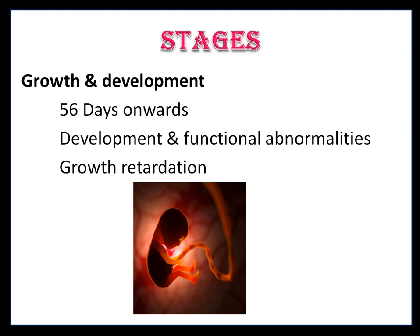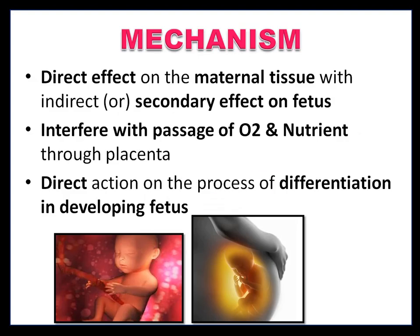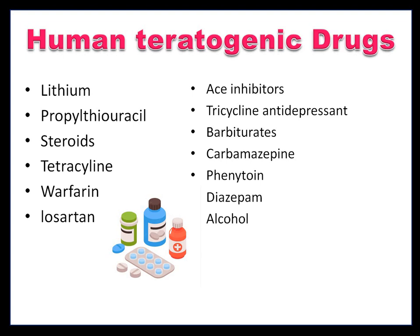From 56 days onwards, development and functional abnormality is present, resulting in growth retardation. The mechanisms include: direct effect on maternal tissue with indirect secondary effect on the fetus, interference with passage of oxygen and nutrition through the placenta, and direct action on the process of differentiation in the developing fetus. Human teratogenic drugs include lithium, propylthiouracil, steroids, tetracycline, warfarin, amiodarone, ACE inhibitors, tricyclic antidepressants, barbiturates,